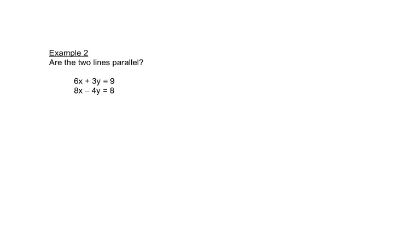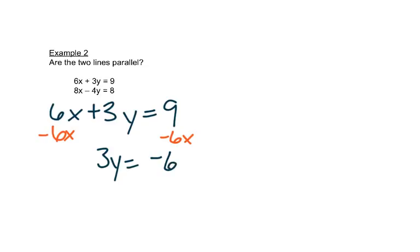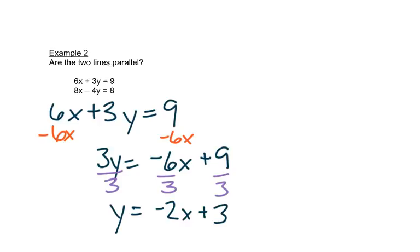Let's look at these. Now we can't see the slopes right away from here. So we'll have to do some work to get this into the right form. We'll subtract 6x from both sides for the first equation. And then we'll divide each piece by 3. So that gives us a negative 2x plus 3. So my slope here is negative 2.